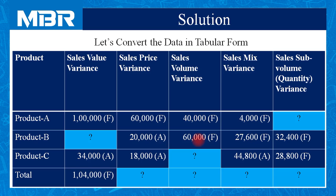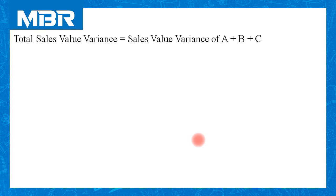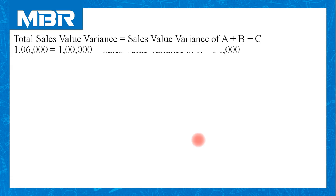Slowly and gradually we will try to calculate all missing items in order to complete this table. Let us start our calculation with the total sales value variance, which equals Rs. 1,06,000 favorable.